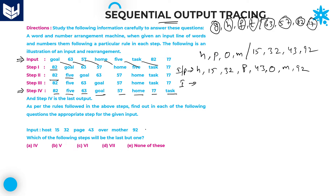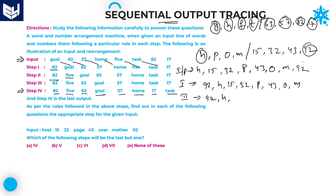In step 1, write the highest number first. The highest number is 92, so 92 comes to first position. Remaining: H, 15, 32, P, 43, O, M. In step 2, after 92, write the first letter in alphabetical order, which is H. After that, write the second highest number, 43. So 43 comes to third position, and remaining as per the order: 15, 32, P, O, M.